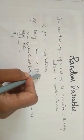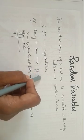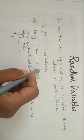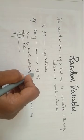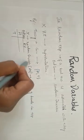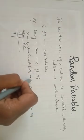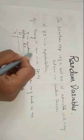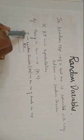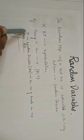Let's take the example of tossing a coin. The outcomes are head (H) or tail (T) — these are called sample points. The set of all possible outcomes is called the sample space. If each outcome of this sample space is represented by a real number, that is called a random variable.